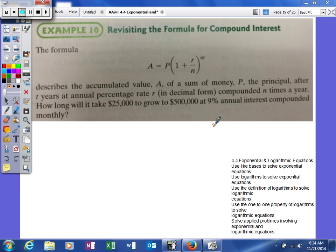In our next example, as you can see, we're going to revisit the formula for compound interest. The formula is A equals P times (1 plus R divided by N) to the Nt power. It describes the accumulated value A of the sum of money, P the principal, after t years. How long will it take for $25,000 to grow to $500,000 at 9% annual interest compounded monthly?